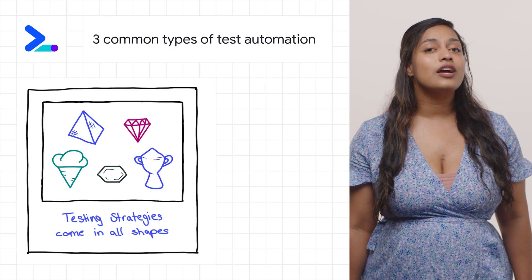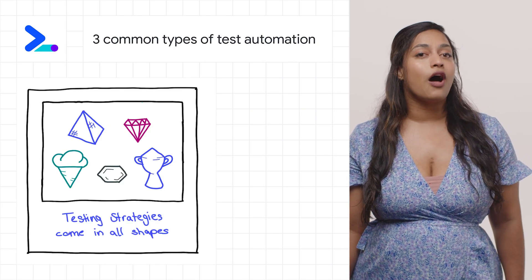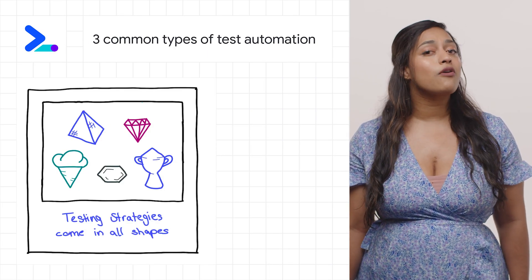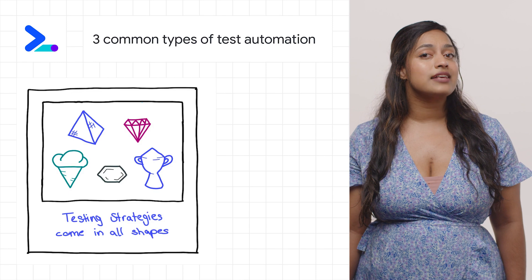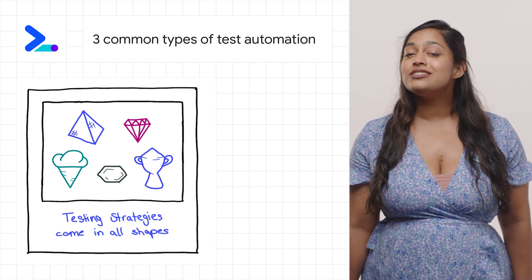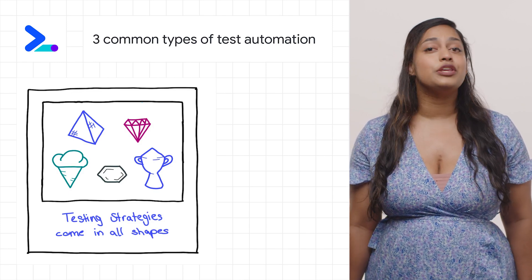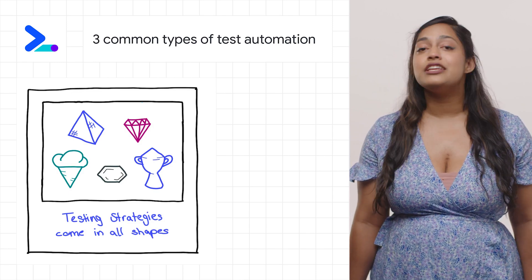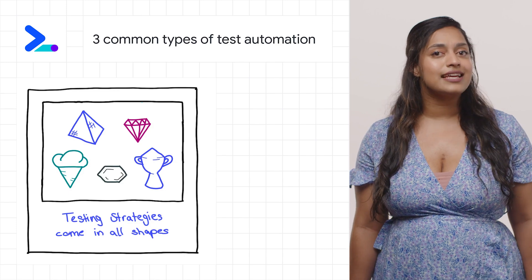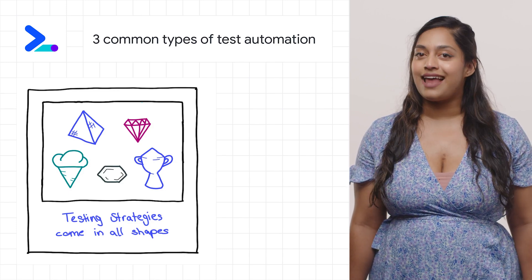Take a look at the Web Dev Blog's latest article to learn more about common types of test automation. This article dives deep into unit testing, integration testing, end-to-end testing, and static analysis.